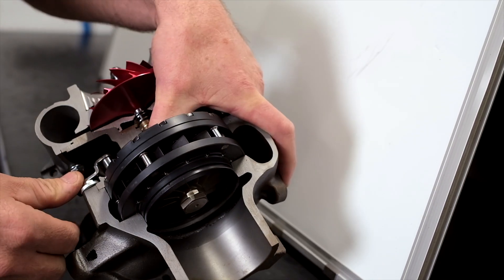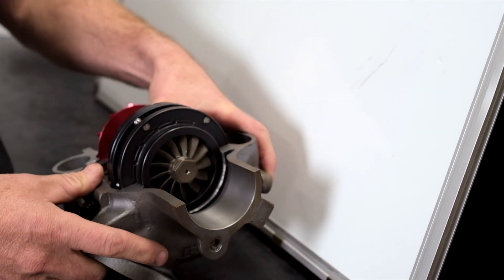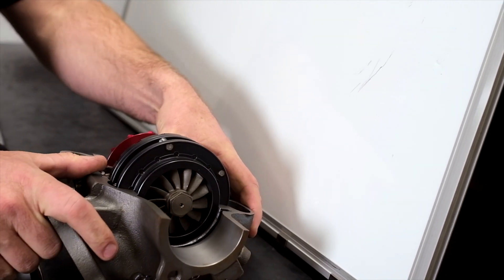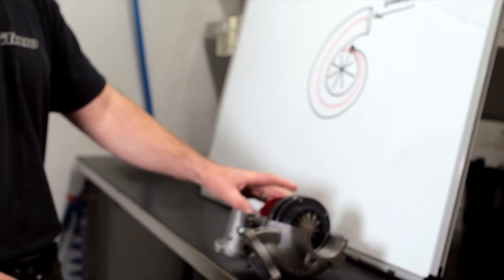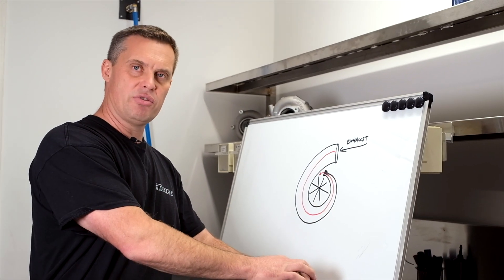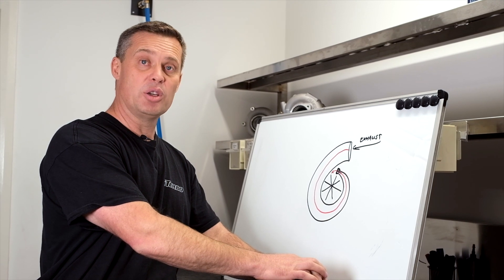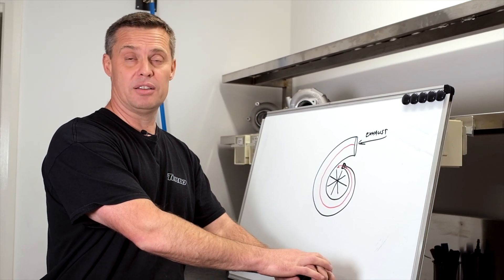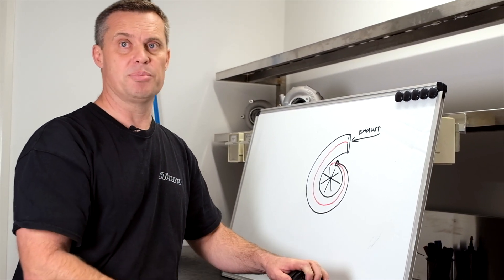You get a much higher efficiency. To give you an example, a wastegated turbocharger running 400 horsepower—if we take that wastegated turbocharger off and put on a G500, a VNT turbo, you pick up 30 horsepower for nothing, no extra fuel, just by reduced back pressure and higher efficiency.